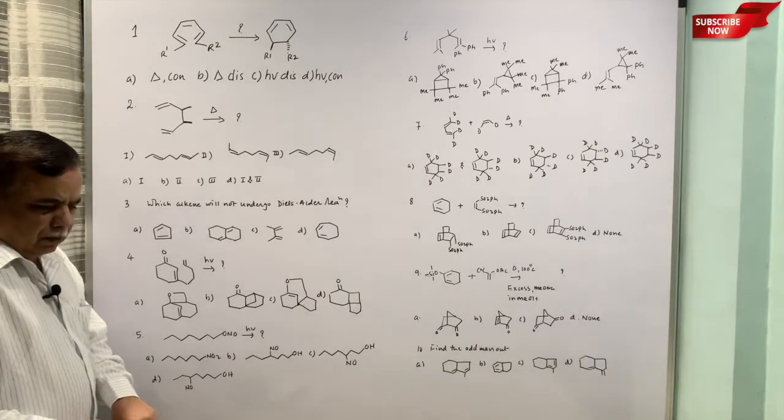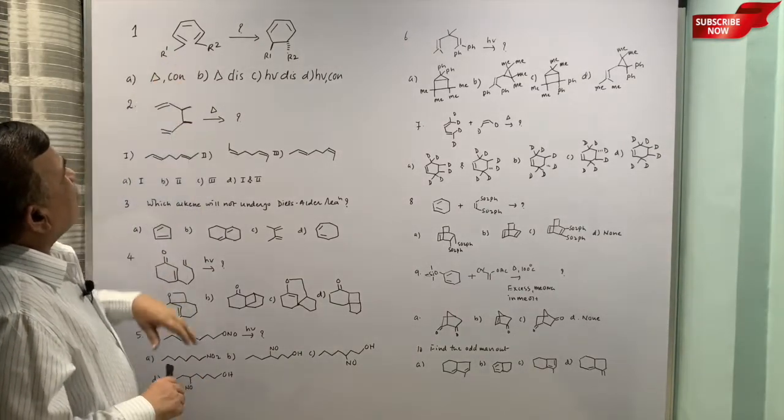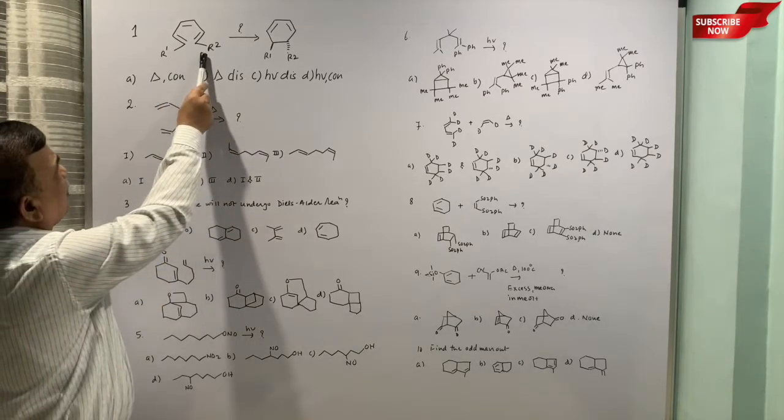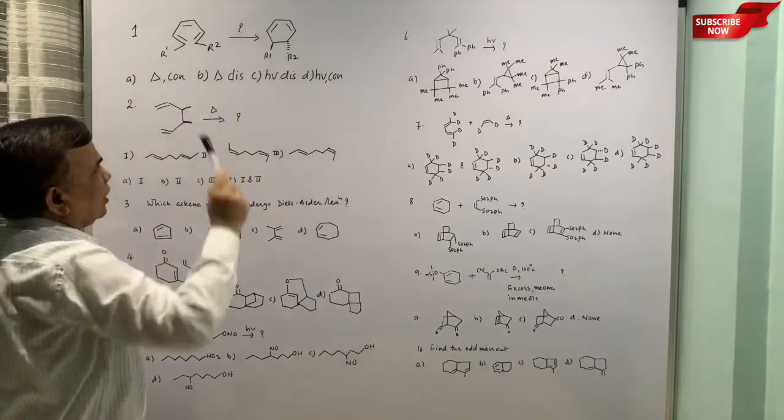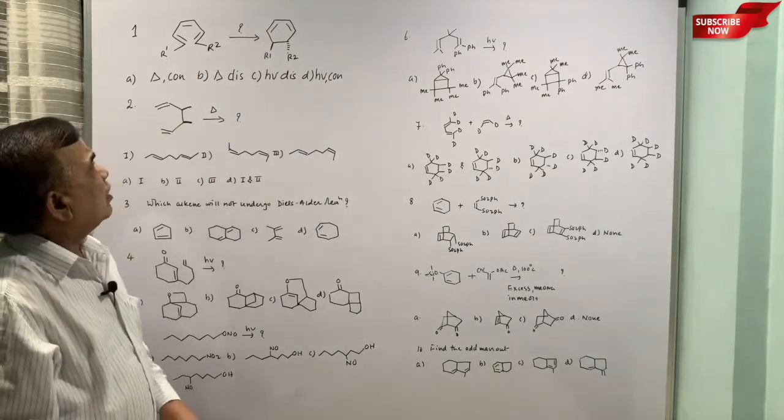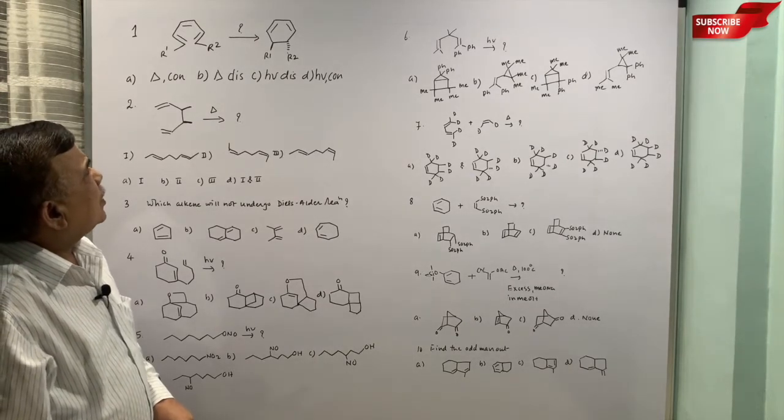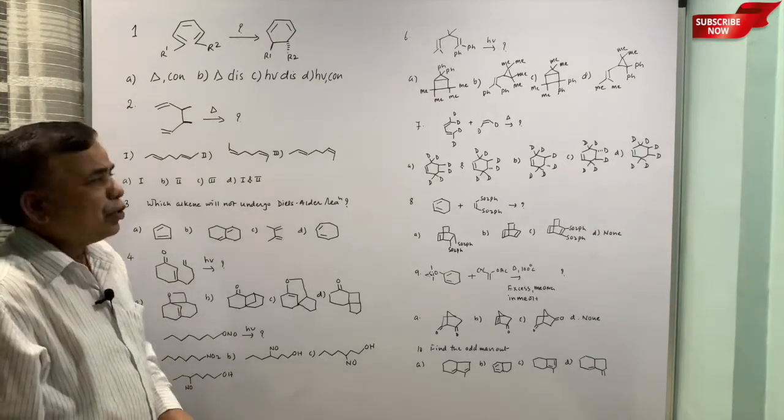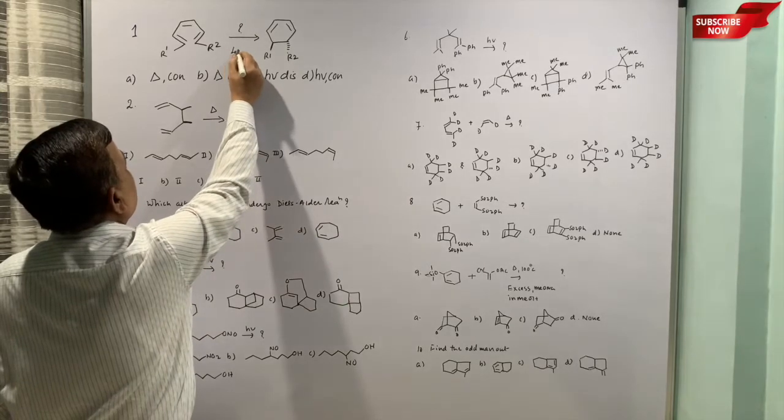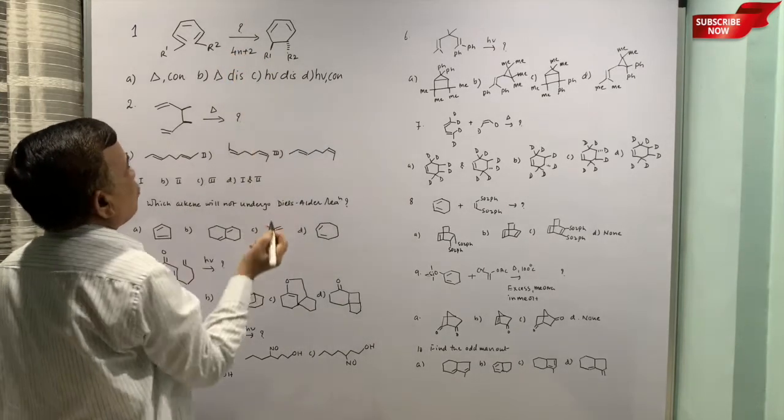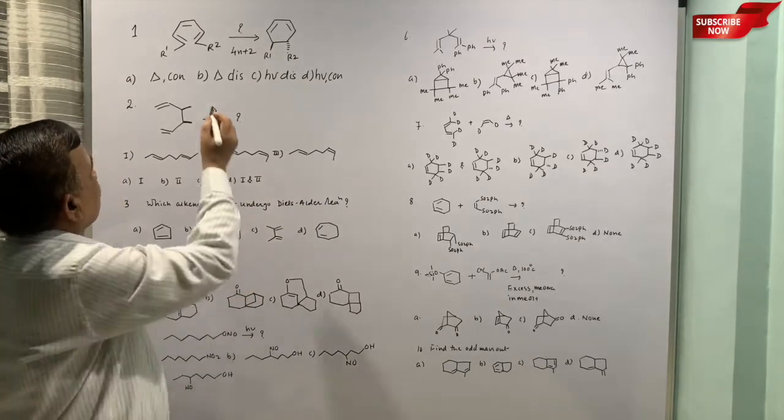We can take one more session later. The first question is this triene and the condition is, you are expected to get a cyclo compound cyclodiene and this is going to be electrocyclic ring closure and if you want to define it, it is going to be 4n+2 π system.